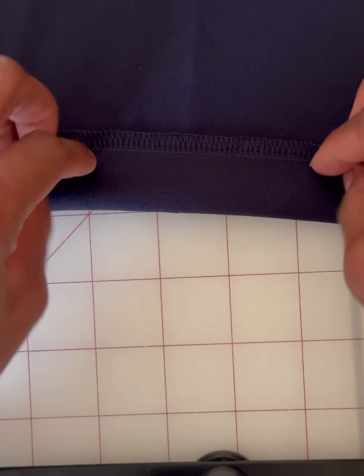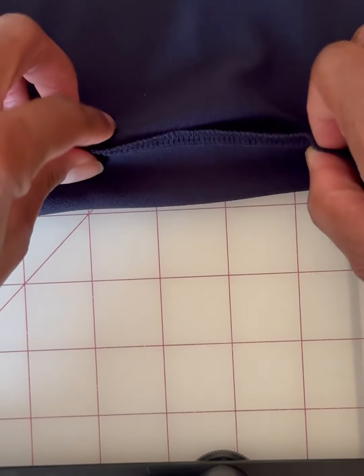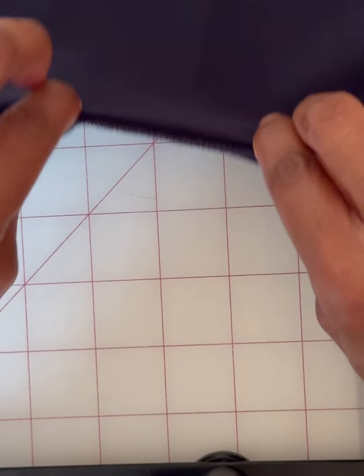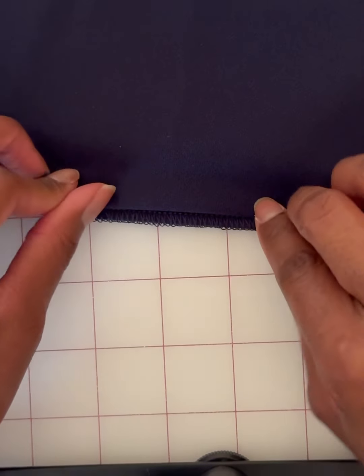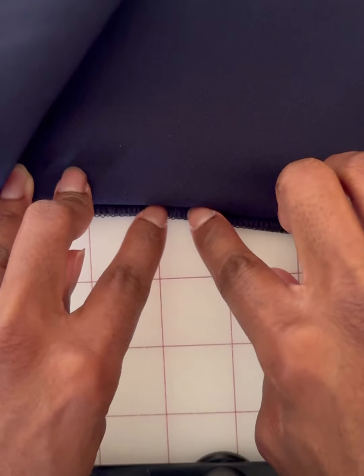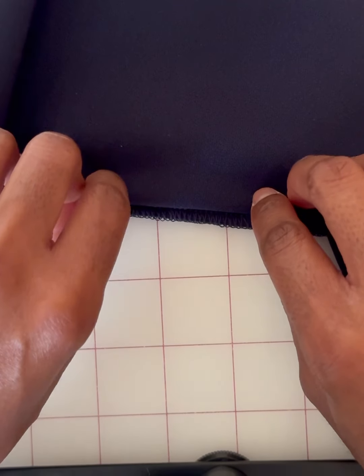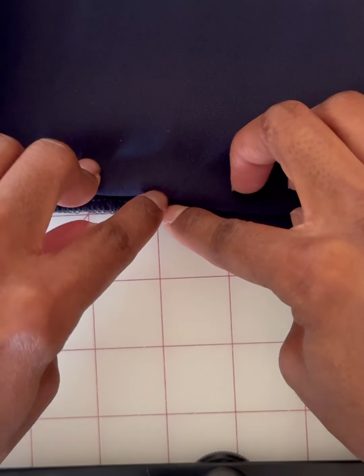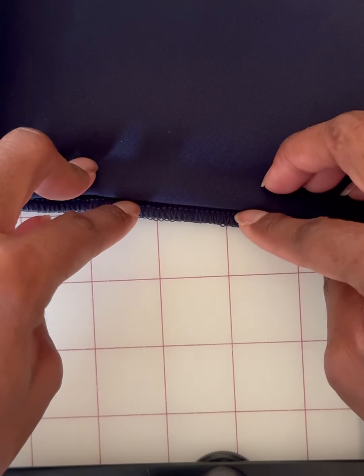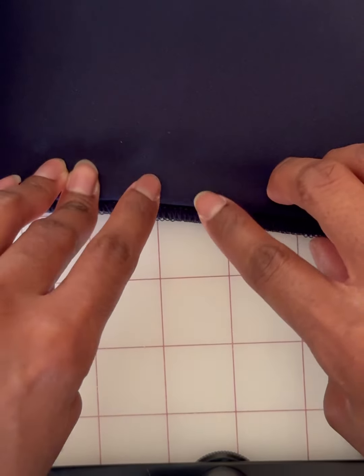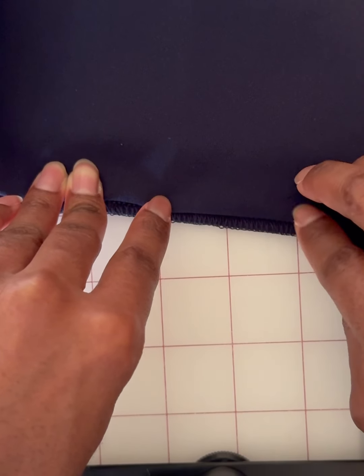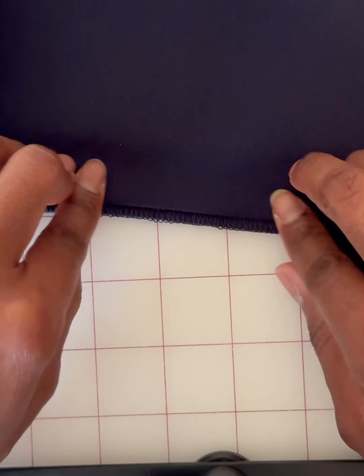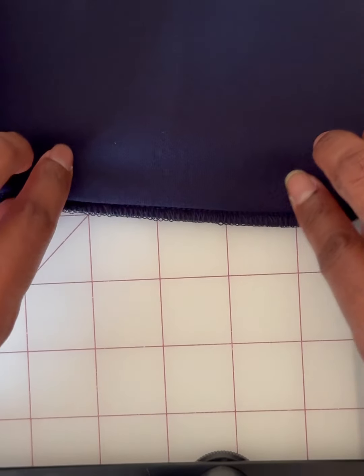So you fold it over. And it'll just sew across there. Or however you do yours, but that's what I'm going to do. Just fold it over so it can stitch right across there. And then the little marks will go here. I think they're like a half an inch apart, but you'll see in a minute.